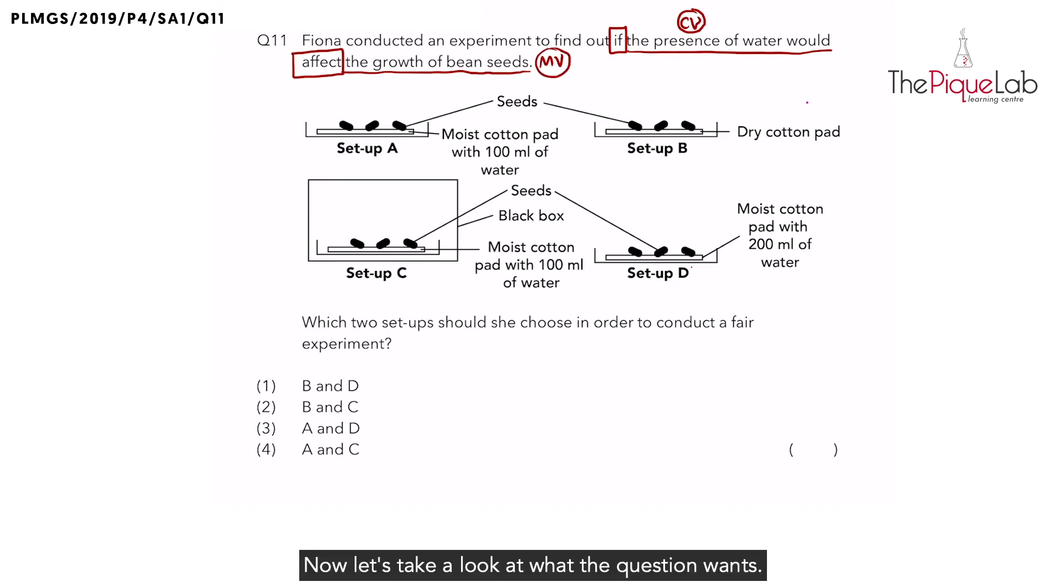Now, let's take a look at what the question wants. The question tells us which two setups would she choose in order to conduct a fair experiment. So when we see these words, a fair experiment or a fair test, what do we need to know? We need to know that in order to conduct a fair test or a fair experiment, you can only have one change variable.